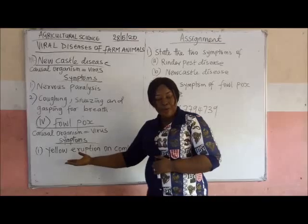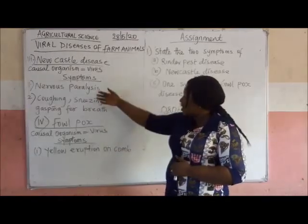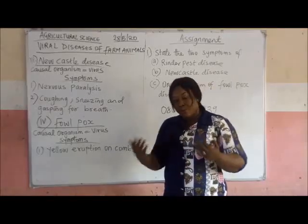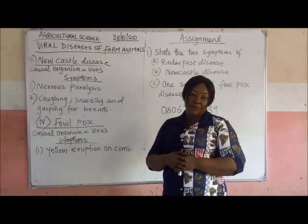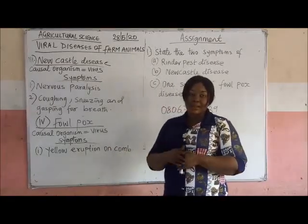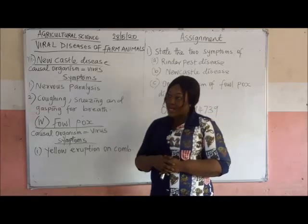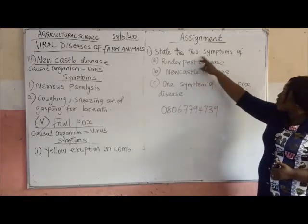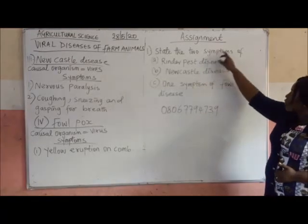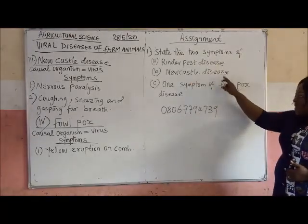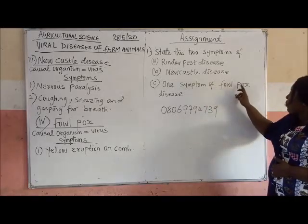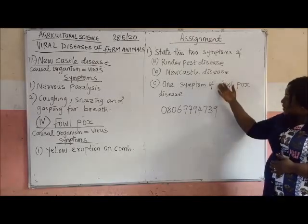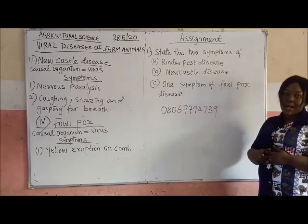The preventive or control measures for Fowlpox are the same as the others: isolate infected animals, quarantine new stock, practice good sanitation on your farm, and vaccinate the animals regularly. Now, having learned this, do this assignment: number one, state two symptoms of Rinderpest disease; two, two symptoms of Newcastle disease; and finally, one symptom of Fowlpox disease. Tear out a sheet of paper, write your name and your class, and forward it to my WhatsApp number.